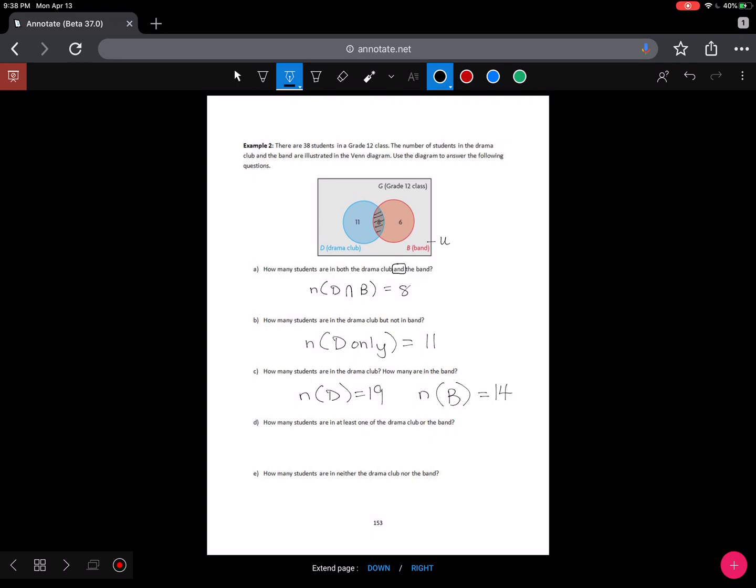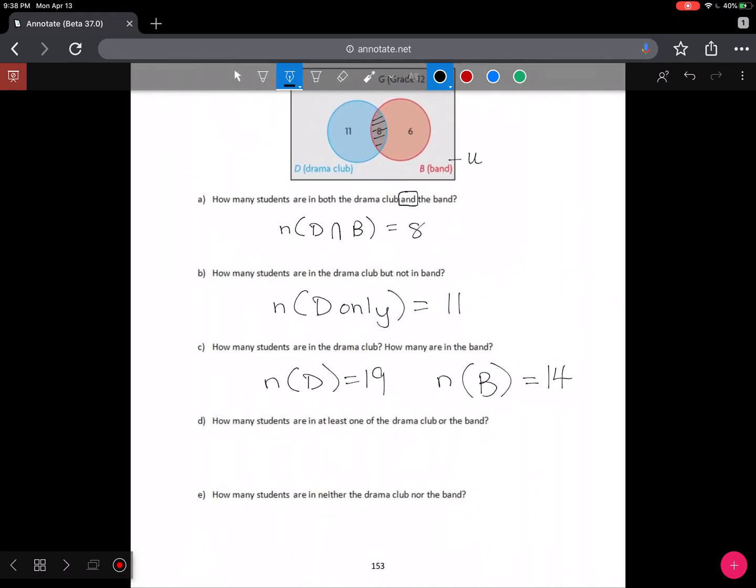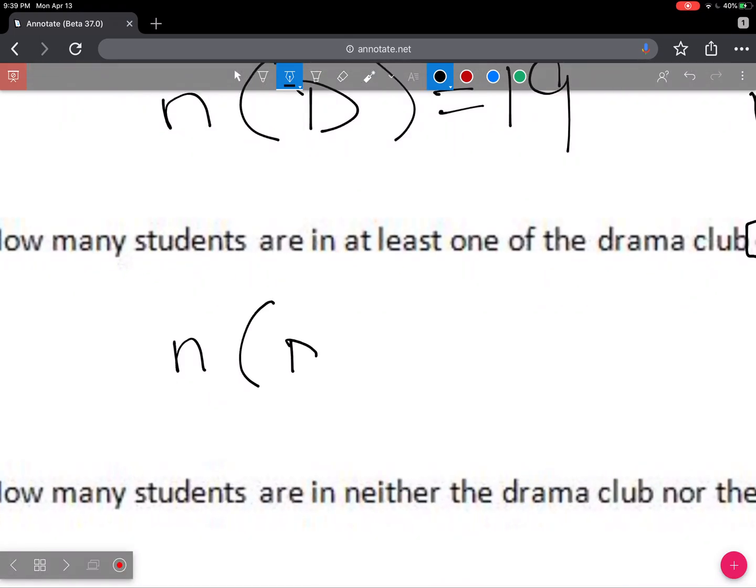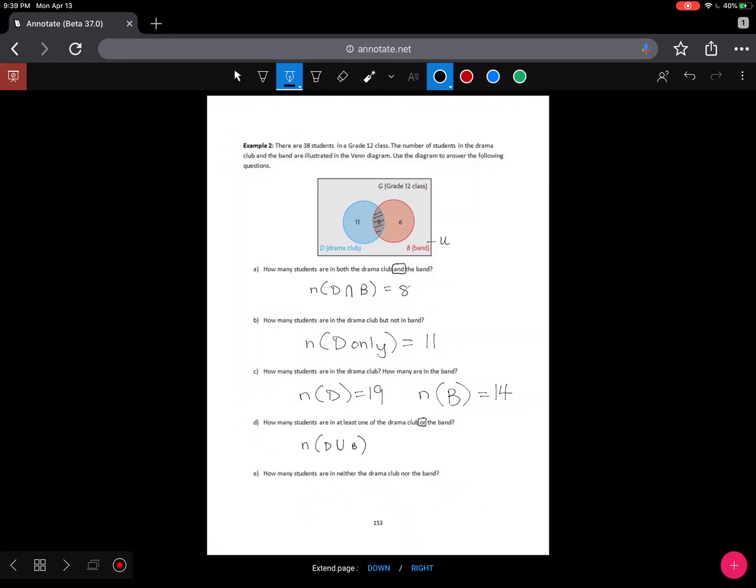How many students are in at least one of the drama or the band? So now the key word that we're going to pick out here is OR. And so what we're looking for is now the union. So the number of drama union band. And so when we go to count everything in here, because that's what the union is, it's everything in D, everything in B. So we just take those three numbers and we have to add them up. So that's 11 plus 8 plus 6, and that's 25.